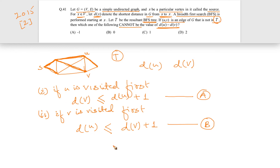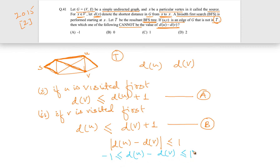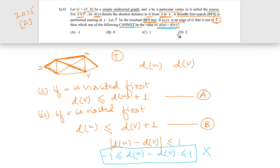From these two equations, we get the relation: |du − dv| ≤ 1, which means du − dv is greater than or equal to −1 and less than or equal to 1. So the possible values of du − dv are −1, 0, and 1. The value 2 contradicts this equation and therefore cannot be the value of du − dv. Since they are asking which value cannot hold, the answer is 2, making option D the correct answer.